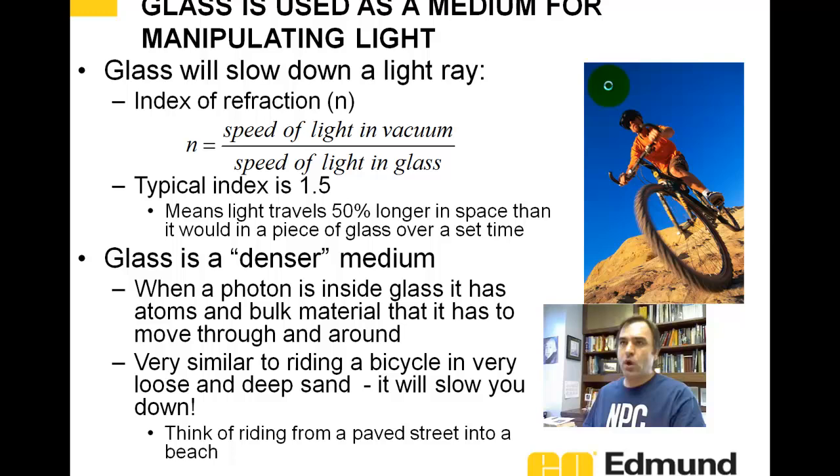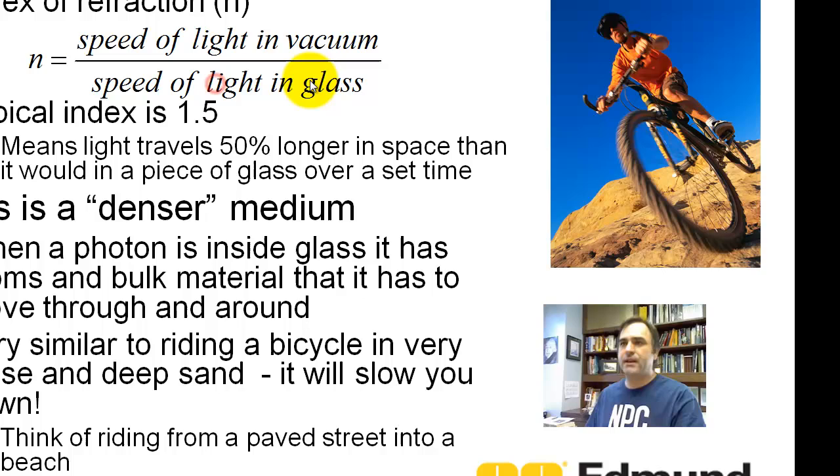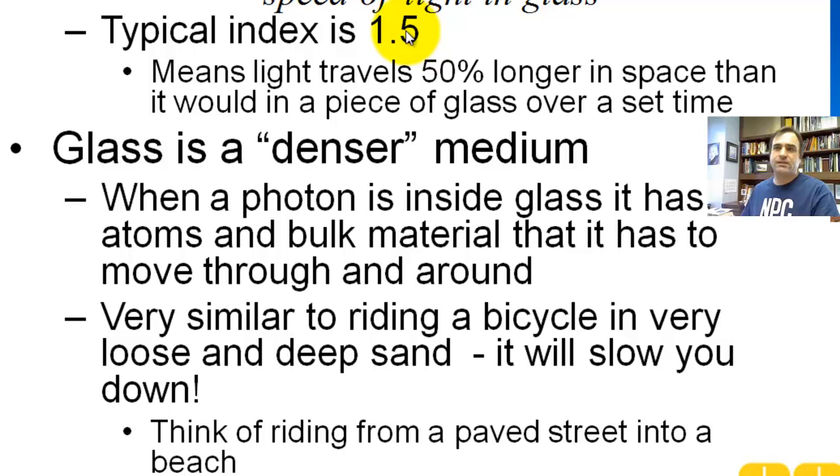Glass is used as a medium for manipulating light, and glass is going to physically slow down the light. So we characterize glass by the speed of light in a vacuum divided by the speed of light in glass. For a glass, if you look out like your window, its index is around one and a half. So that means light is going to travel 50% farther in space than it would in a piece of glass for a set amount of time. So glass is a denser medium, and I like to think of a photon going into this medium, a bulk material. It's got to move through and around atoms. This is very similar to riding a bicycle, and I like this analogy because it's going to give you a good intuitive understanding. Let us suppose you're on a bike and you're riding on a freshly paved road. That's very nice and smooth. That's like air. And then you go into deep sand, and that's going to slow you down. That's like glass.